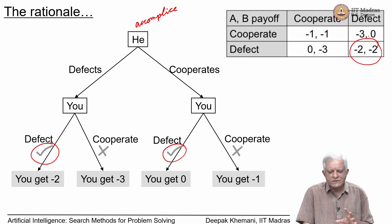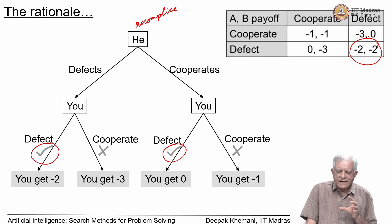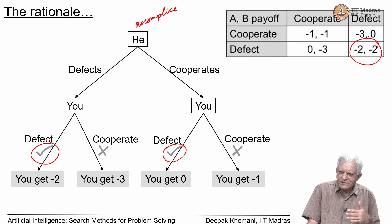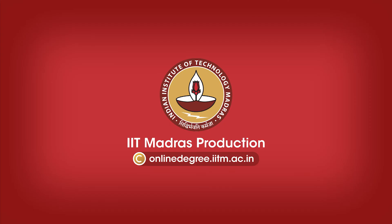So this shows that rational self-interest can result in outcomes which are worse than if the players had been able to cooperate.